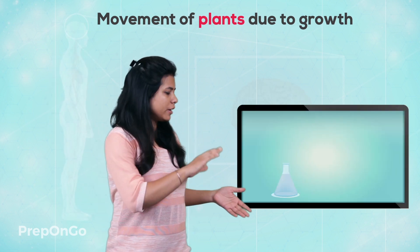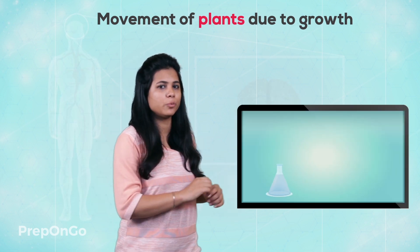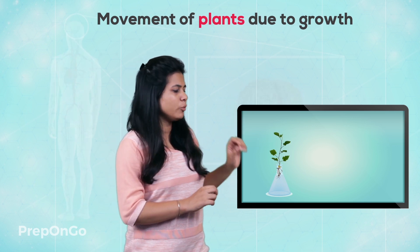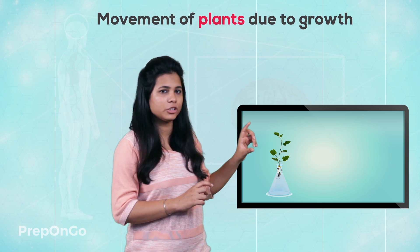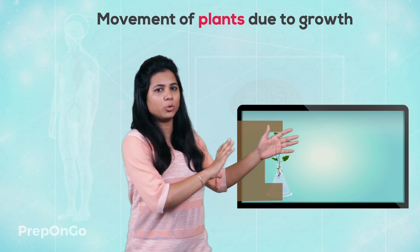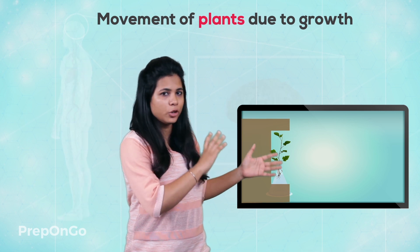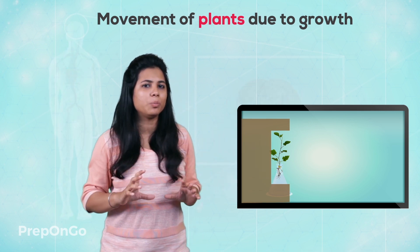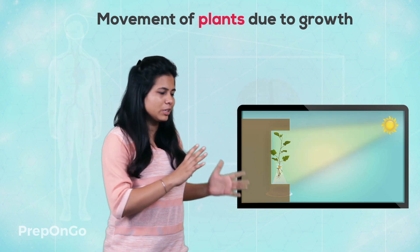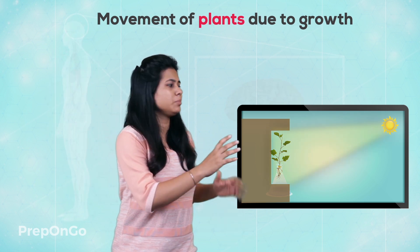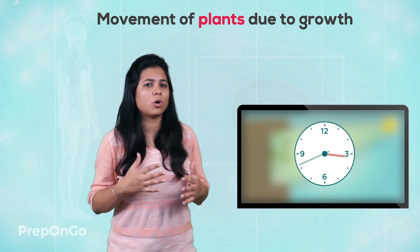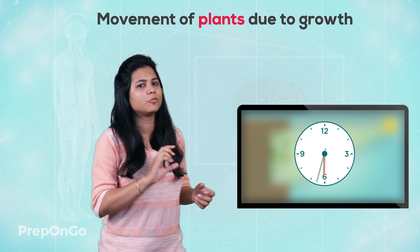Here we have taken a conical flask filled with water. In this we put a plant sapling which has small roots and a shoot. Now we keep this whole setup inside a cardboard box. This cardboard box is fully closed with only one opening from where it can receive sunlight. We have to keep this sapling setup inside this cardboard.